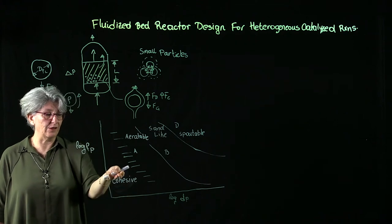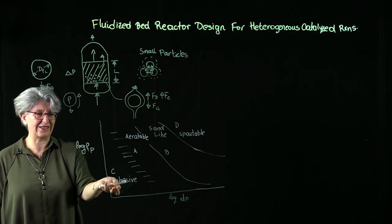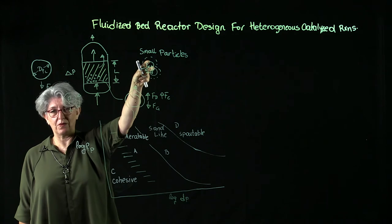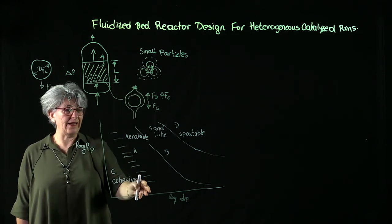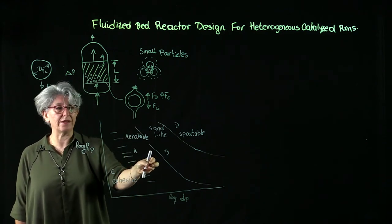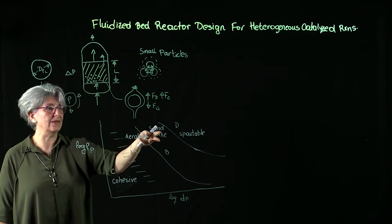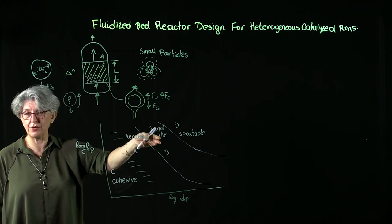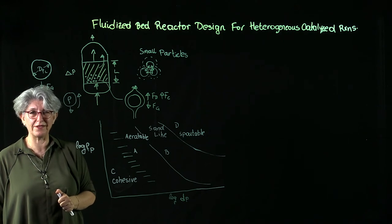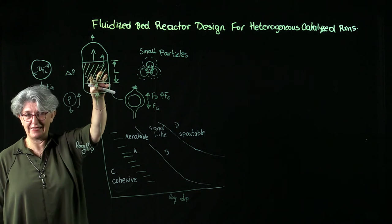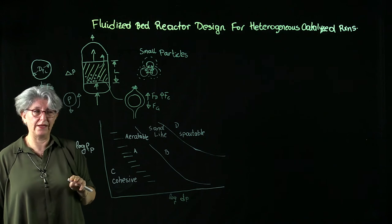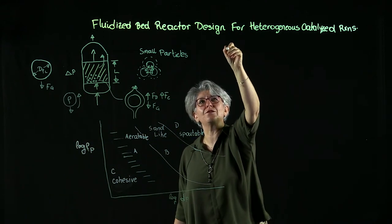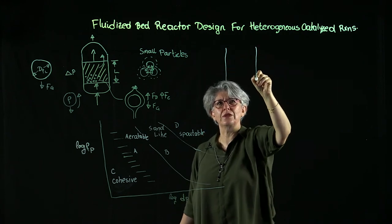In the Geldart chart, low particle diameter with low particle density corresponds to type C particles with high cohesive forces — small particles with low density that hold together. As particle diameter increases, we have aeratable particles that we can more easily fluidize. Sand-like type B particles have larger diameter and perhaps larger density. Let's see what happens when we expose a packed bed reactor to a fluid with gradually increasing momentum.